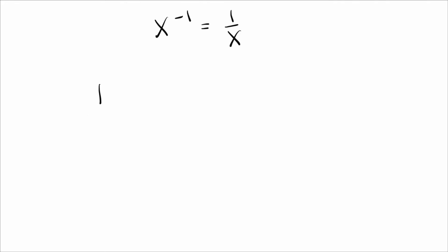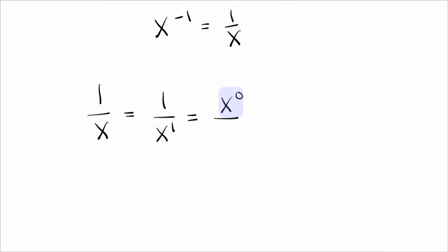The way to do this is to start with one over x, and first rewrite x as x to the one power. The trick is to rewrite everything with x's — in particular, that one on top. We rewrite one as x to the zero power. If you don't know that x to the zero power equals one, I have a video that explains why that's true. But indeed, x to the zero power is one.